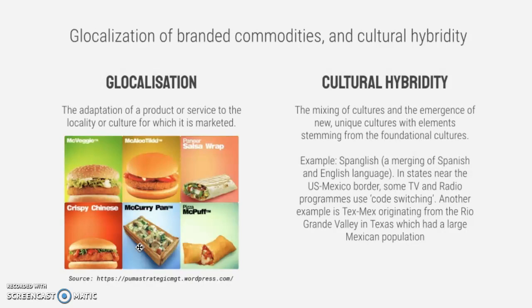Cultural hybridity is the mixing of cultures and the emergence of new unique cultures with elements stemming from the foundational cultures. Examples include Spanglish, which is the merging of the Spanish and English language when speaking. In states near the US-Mexico border, some TV and radio programs use code switching — the idea of switching between English and Spanish. Another example is Tex-Mex cuisine, originating from the Rio Grande Valley in Texas, which had a large Mexican population. This is the idea of mixing cultures which creates a new hybrid culture.